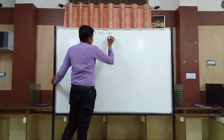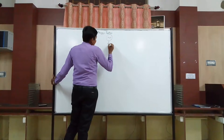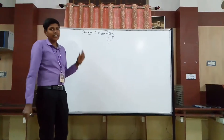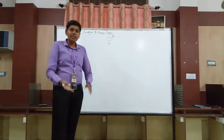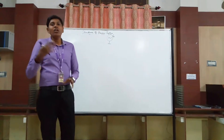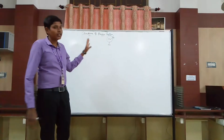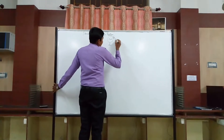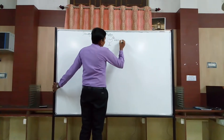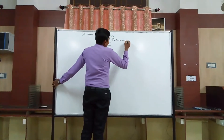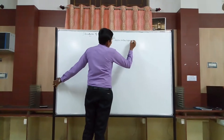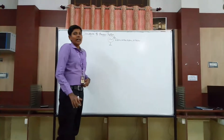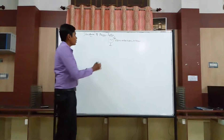First of all, we are having a generating station. In the generating station, we are having a generator. The generator may be a thermal generator, a hydro generator, or other types. The rated voltages we are generating are 6.6 KV, 10.5 KV, 13.8 KV, and 15.7 KV. These are the general voltage ratings of generators we are having.